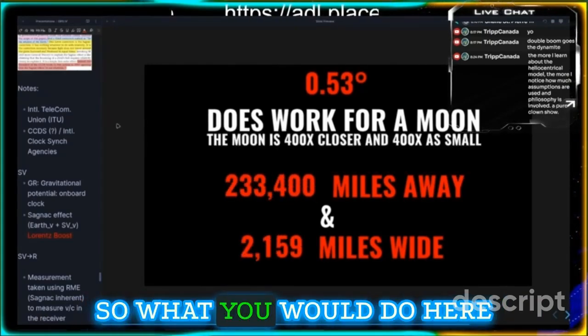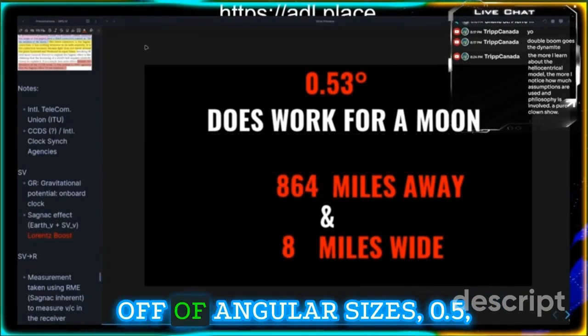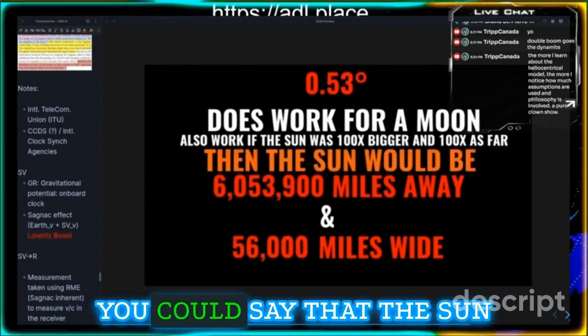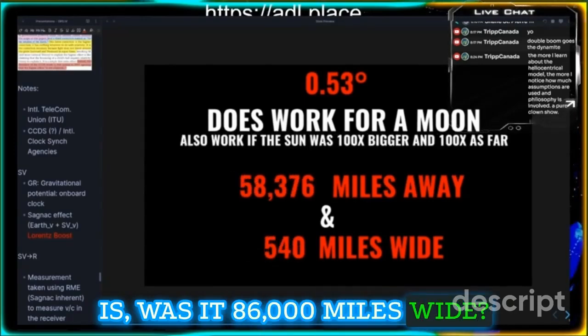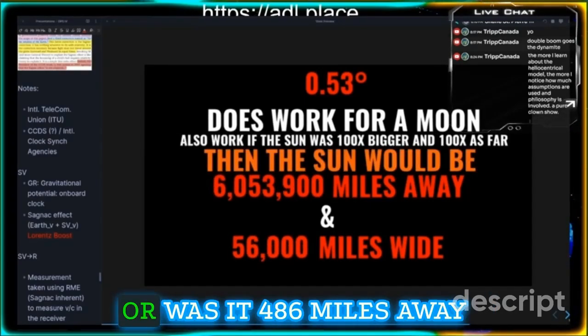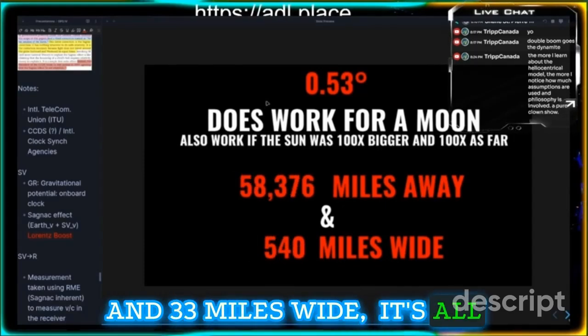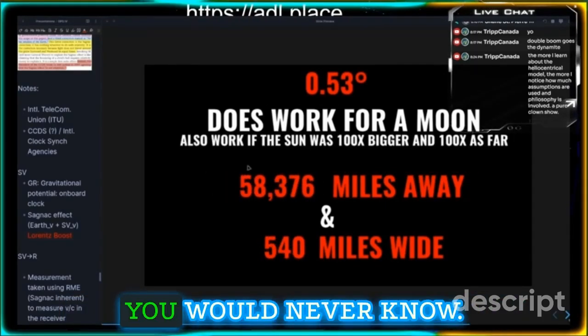Since the distances are all based off of angular sizes, 0.53 degrees angular size, you could say that the sun is 86,000 miles wide, 93 million miles away, or 486 miles away and 33 miles wide. It's all proportional to the distance. If you can't verify it, you would never know.